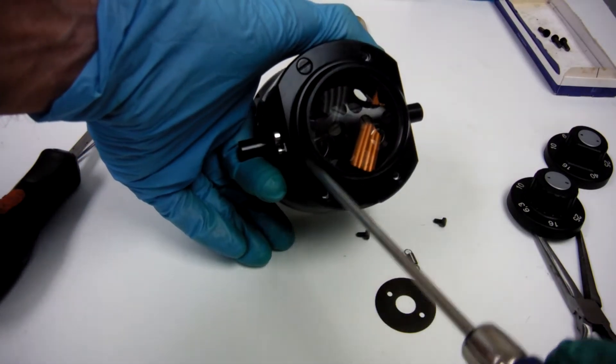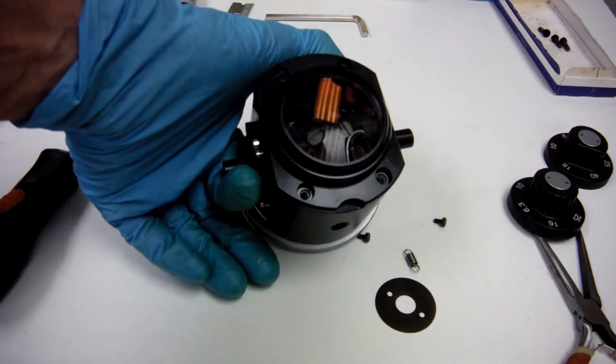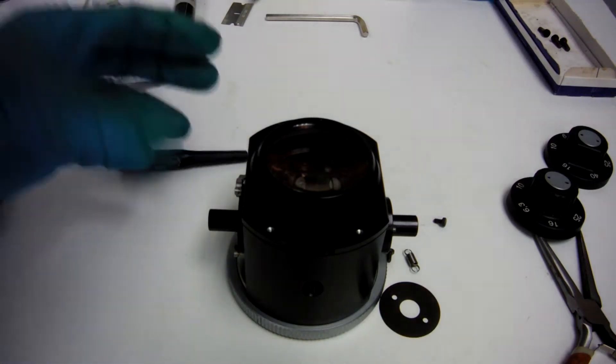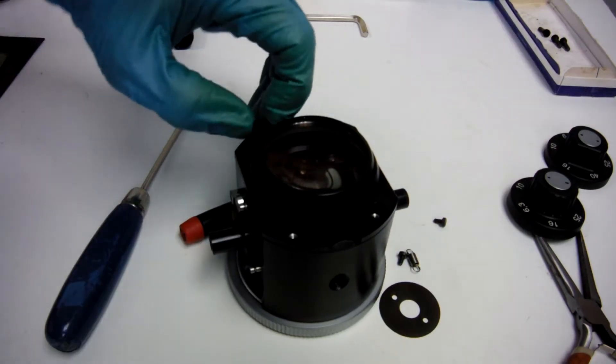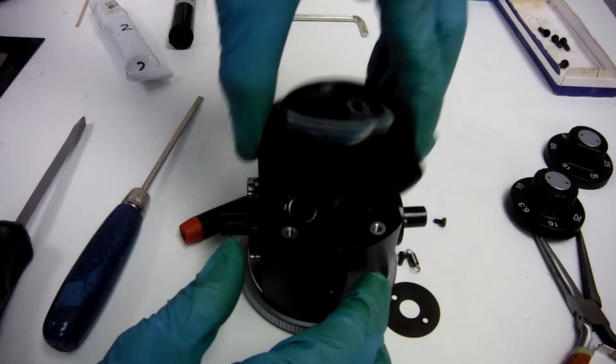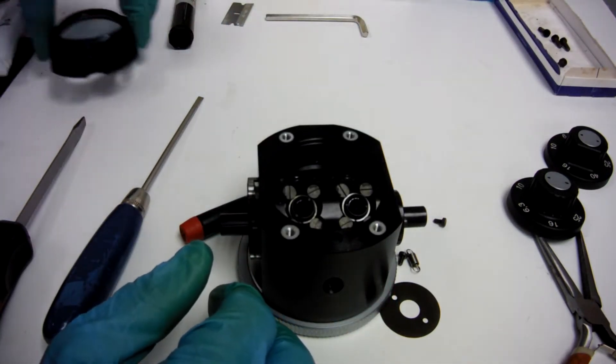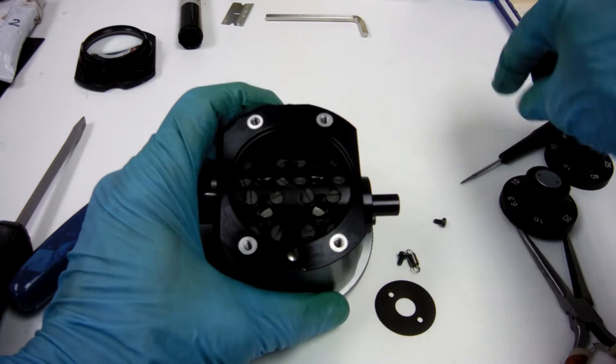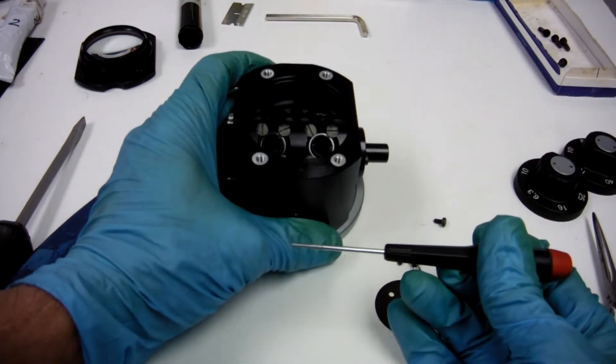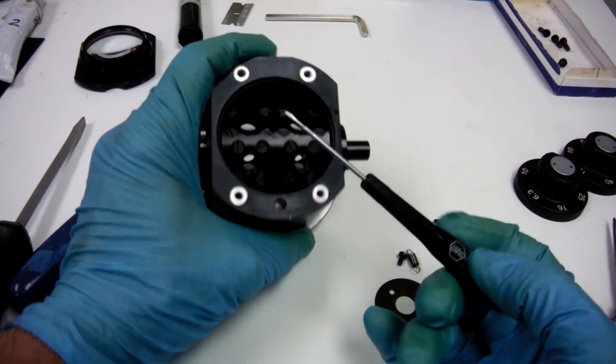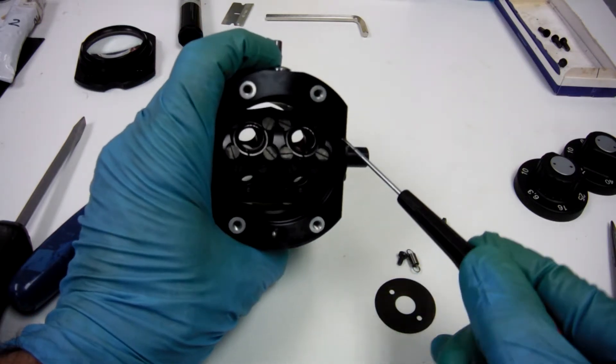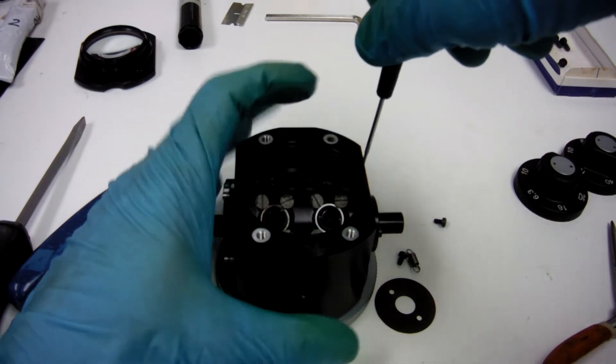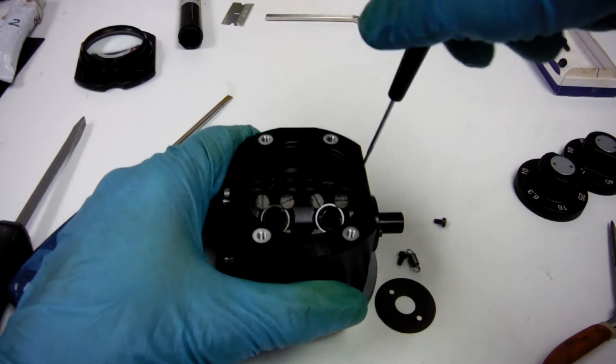There's four screws here. I've already taken three off. I'm going to take the fourth one off. These might be pretty tough. Take this off. Put it to the side. Now, we're going to get our jeweler screwdriver. And right there. Just going to unscrew it until it gets flush with the top. And that'll be sufficient.